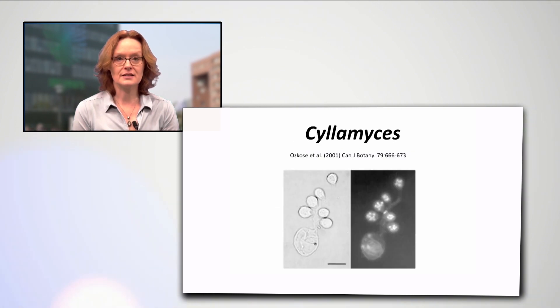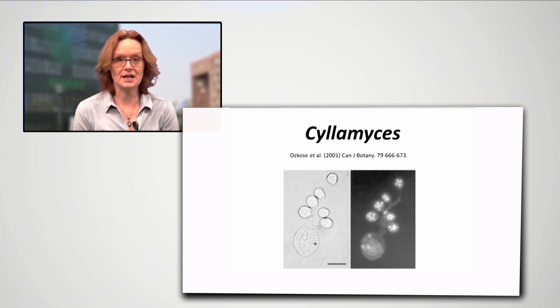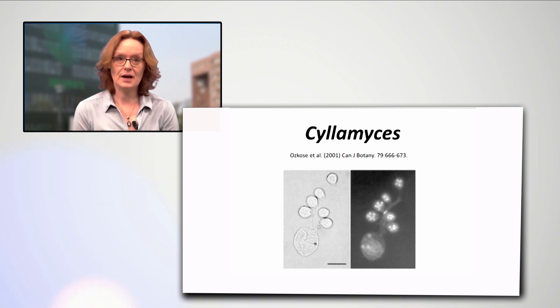Caecomyces was the second genus discovered that had a bulbous rhizomycelium. Unlike the earlier bulbous genus, Caecomyces is polycentric.